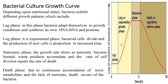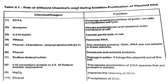Role of different chemicals used during isolation and purification of plasmid DNA: EDTA removes the exopolysaccharide from gram-negative cells and facilitates cell lysis. Lysozyme attacks the peptidoglycan and weakens the membranes of cells. 0.2 N sodium hydroxide causes gentle lysis of the cell. RNase removes RNA. Phenol-chloroform-isoamyl alcohol in the ratio of 25:24:1 removes proteins and DNA/RNA that are not soluble in this solvent.